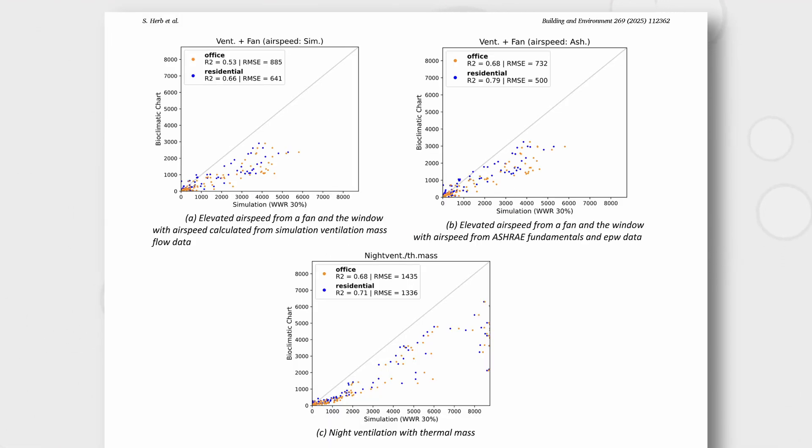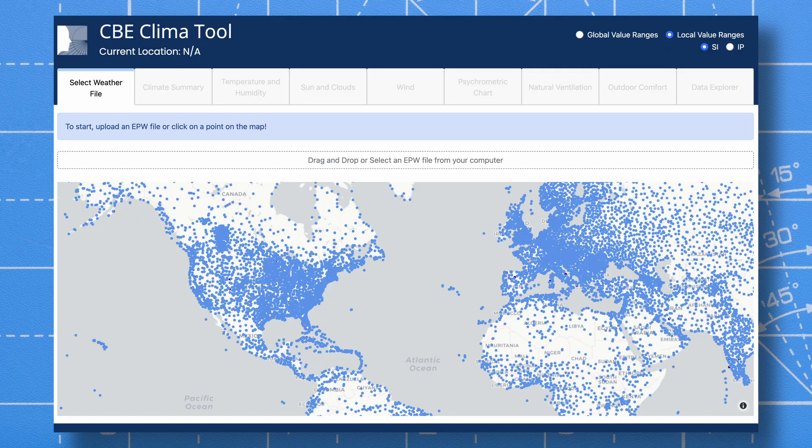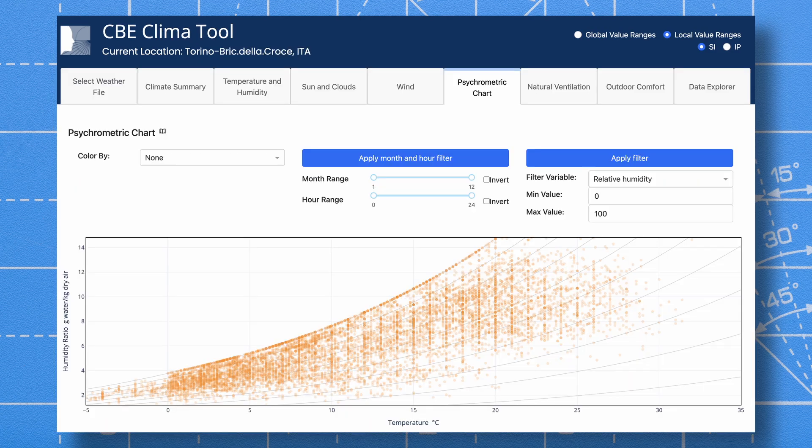The MIT team compared the bioclimatic chart against simulations run by eCompass and the results were actually concerning. They found that the bioclimatic chart can over- or under-predict the need for air conditioning in many cases. This is the reason why we decided not to include the bioclimatic chart inside the CBE climate tool.